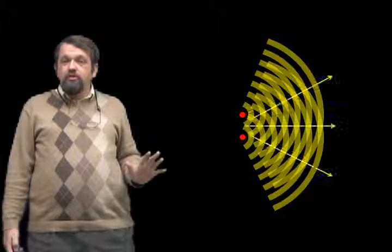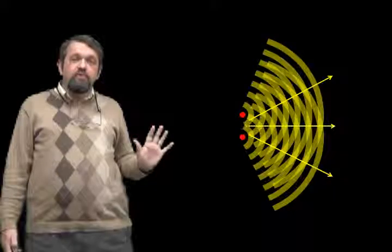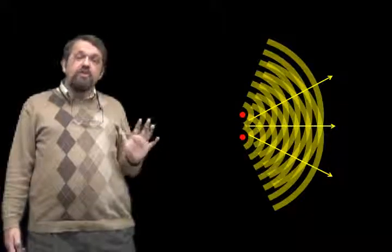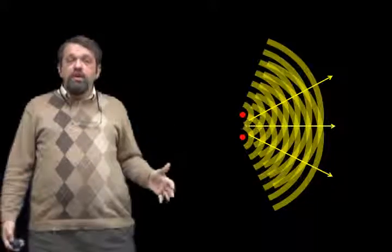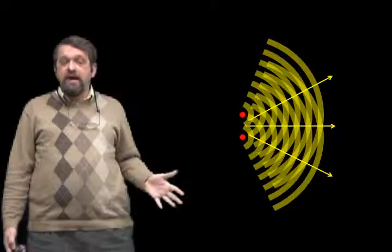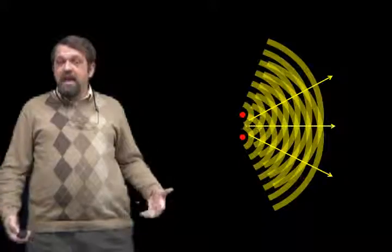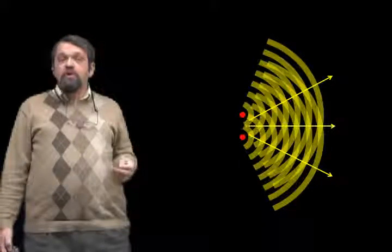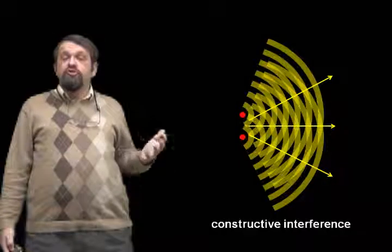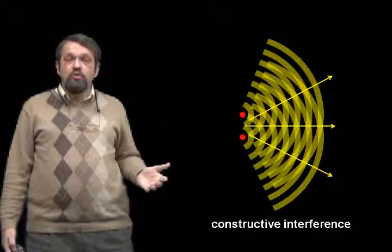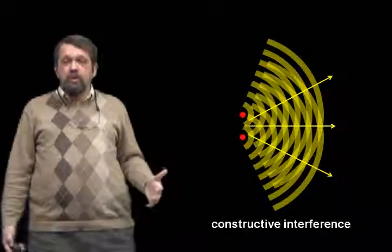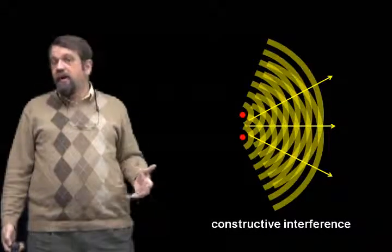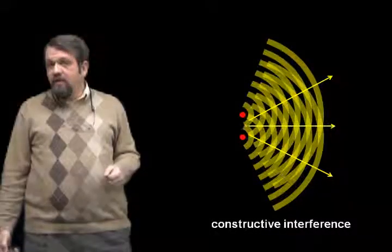Now, along some directions, we notice that the crests of the two waves coincide. Along these directions, the two waves will add up to a stronger wave — a wave of twice the amplitude of each wave individually. Along these directions, we have what's called constructive interference between the two waves. The two waves add up to a wave that is twice the amplitude of the original, and therefore four times the intensity.